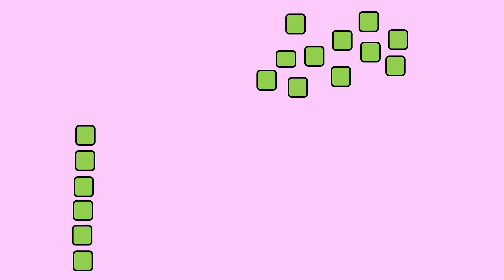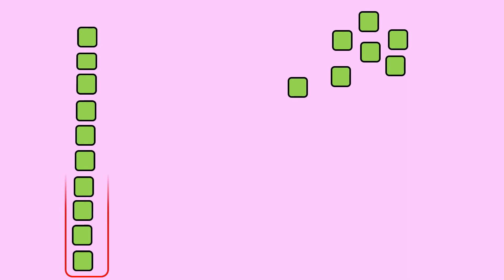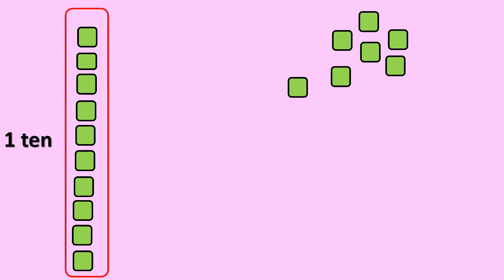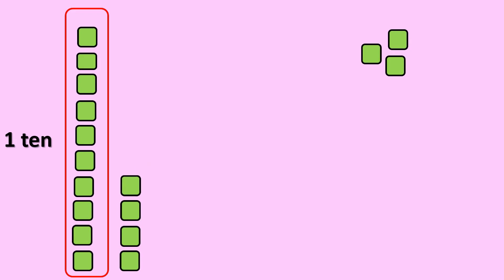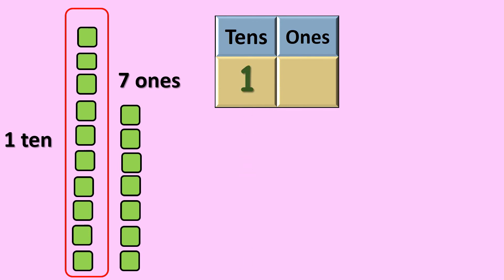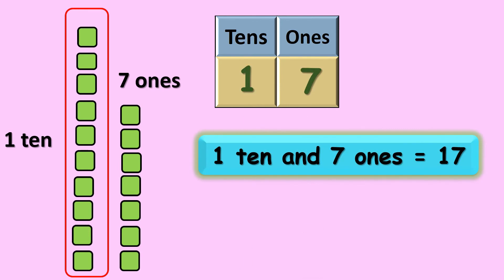It's time to find our next number. 1 2 3 4 5 6 7 8 9 10. 10 ones gives you 1 ten. The remaining are 1 2 3 4 5 6 7. There are 7 ones. So 1 ten and 7 ones gives you 17.